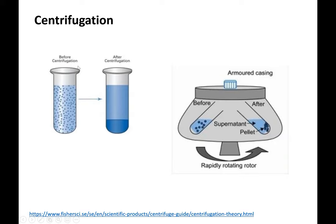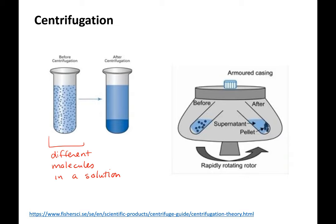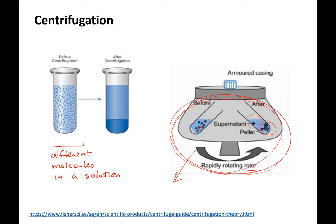What you can think of is that you have a solution with lots of different types of molecules. We're basically going to spin them in this rotor, in this centrifuge, round and round. The heavier stuff is going to go towards the bottom of your tube, and the lighter stuff will stay in the supernatant. It's a technique to separate these different molecules.